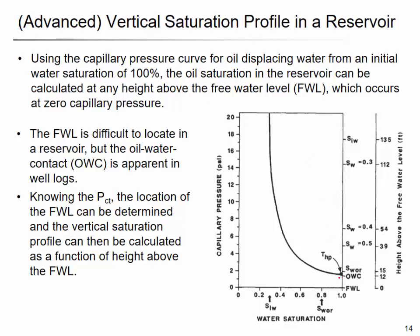With the capillary pressure function and the water saturation function, if you convert the capillary pressure to the height above the free water level, you can predict the increase and decrease in oil saturation from the bottom of the reservoir. For example, if the FWL is at a certain depth, from the capillary pressure you can estimate approximately 70% or 60% oil saturation at a given height. More detailed explanations are in the suggested readings.